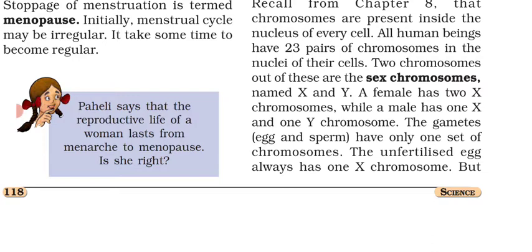An important point: females have two sex chromosomes that are both X — so female sex chromosomes are XX. Males, on the other hand, have two chromosomes that are X and Y. So: female has XX and male has XY. Both males and females have their own set of sex chromosomes carried in their gametes — sperm in males and eggs in females.